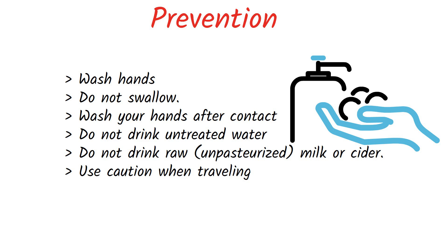Do not drink untreated water from lakes, rivers, springs, ponds, and streams. Do not drink raw or unpasteurized milk or cider. Use caution when traveling in countries with minimal water treatment and sanitation systems by avoiding tap water, fountain drinks, ice, and raw foods. If one feels symptoms of crypto, he should contact a healthcare provider for proper diagnosis.